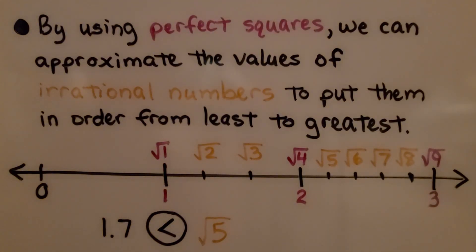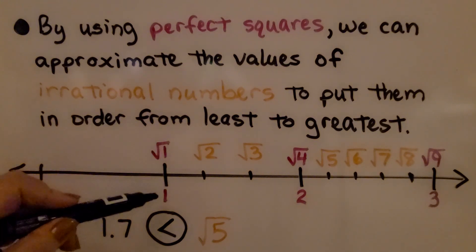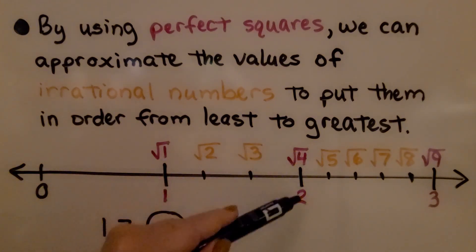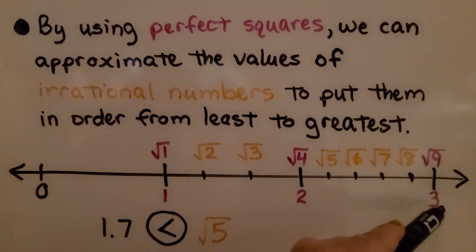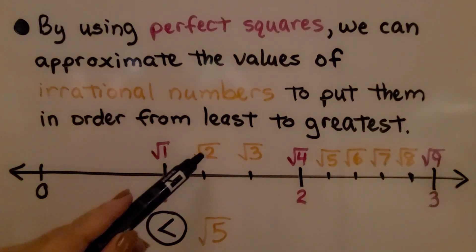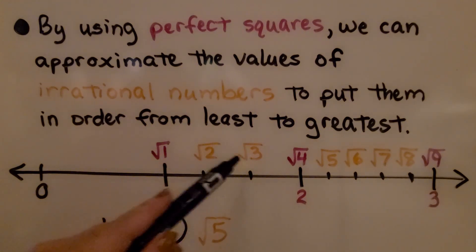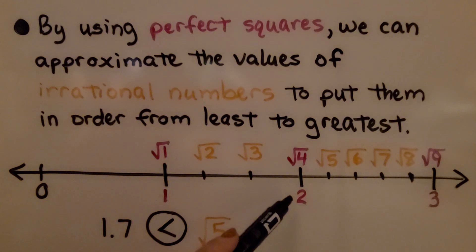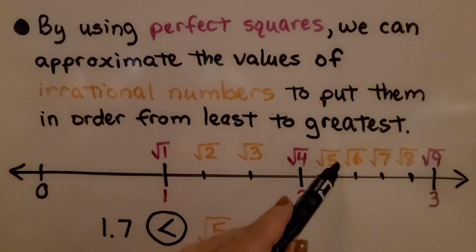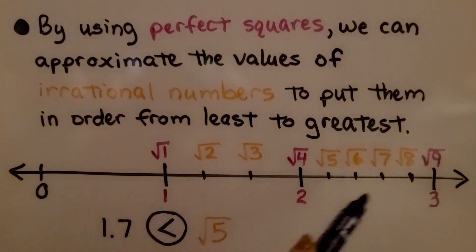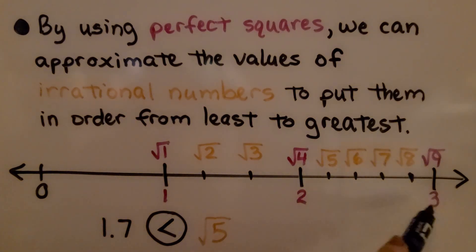By using perfect squares, we can approximate the values of irrational numbers to put them in order from least to greatest. The square root of 1 is 1, the square root of 4 is 2, and the square root of 9 is 3. We know that the square root of 2 and the square root of 3 fall between 1 and 2, and the square root of 5, 6, 7, and 8 fall between 2 and 3.